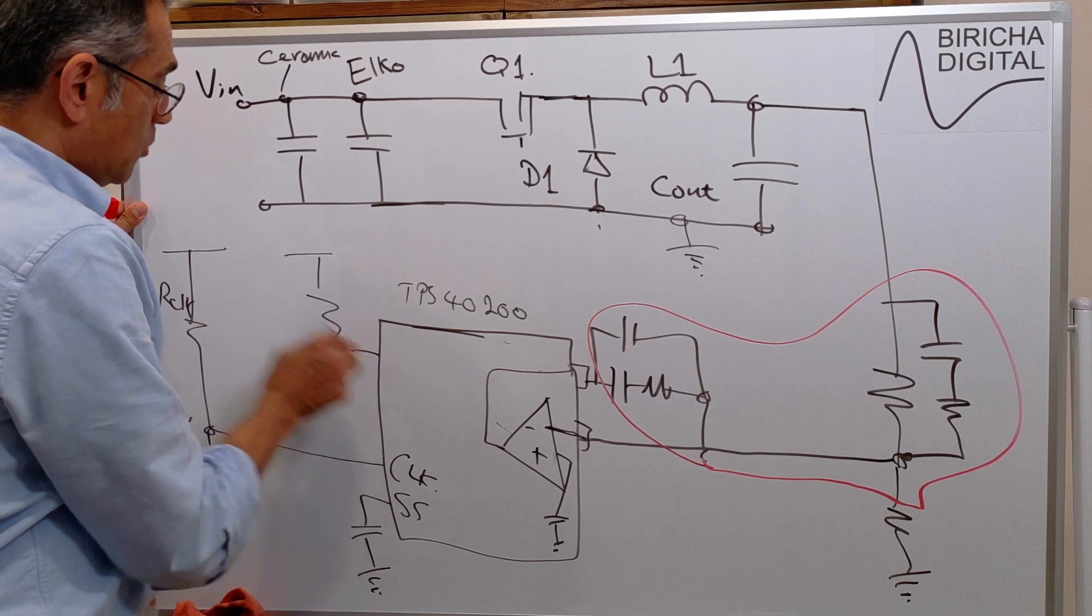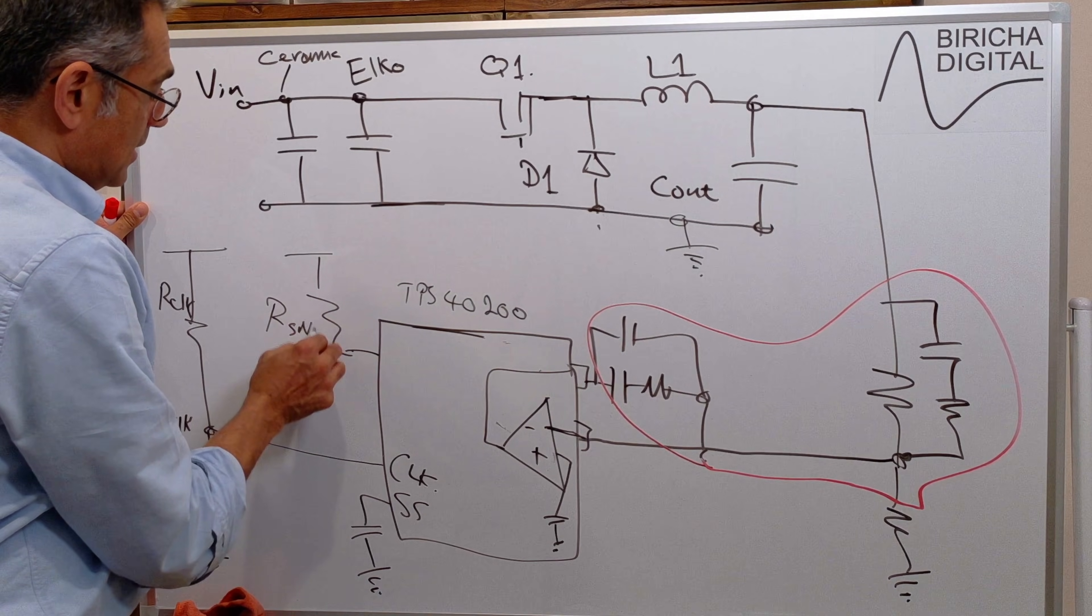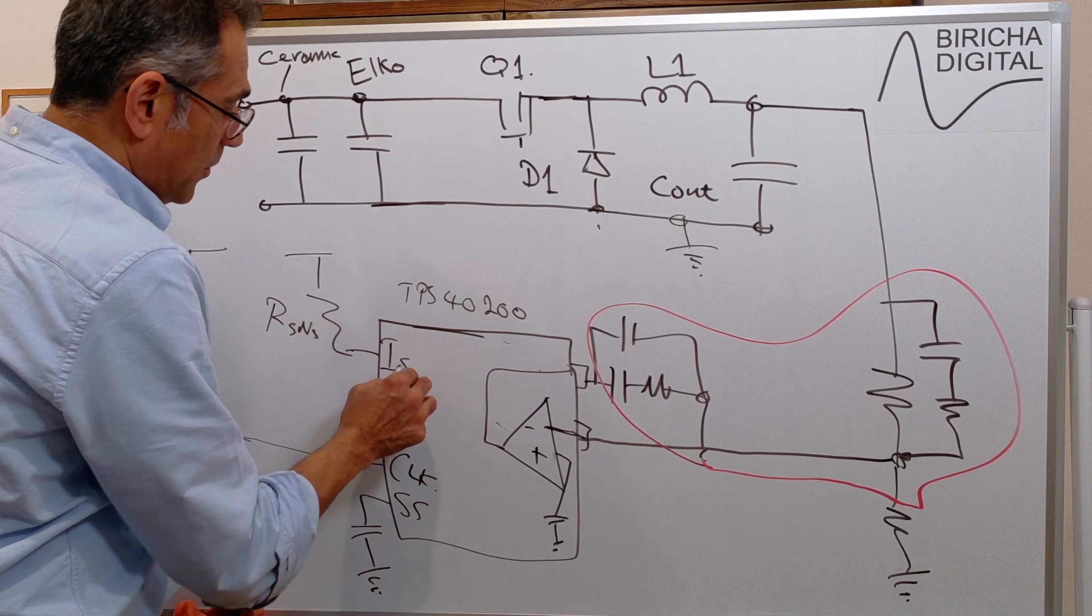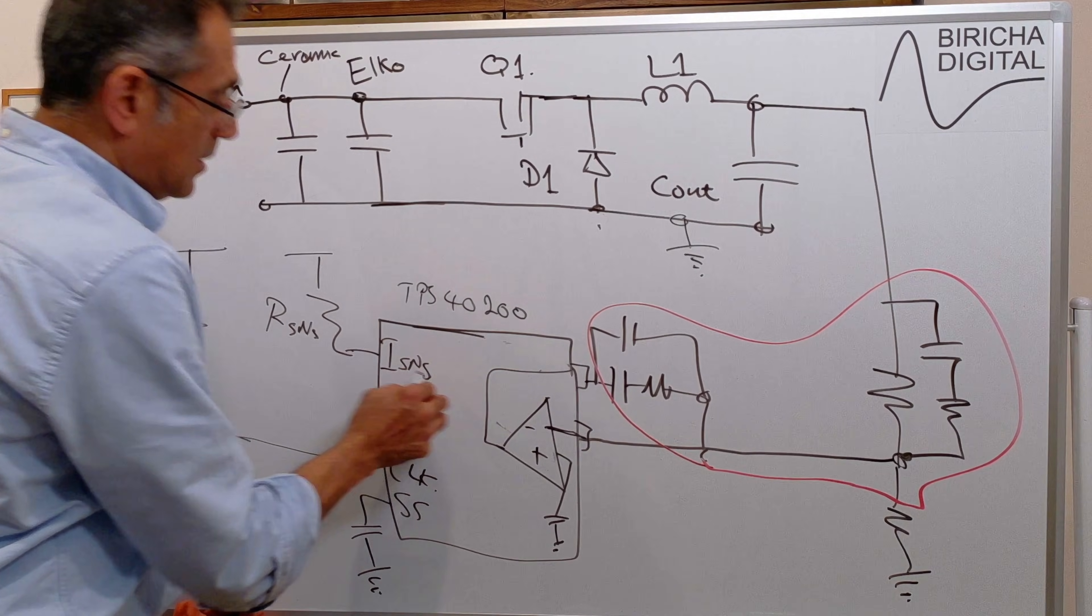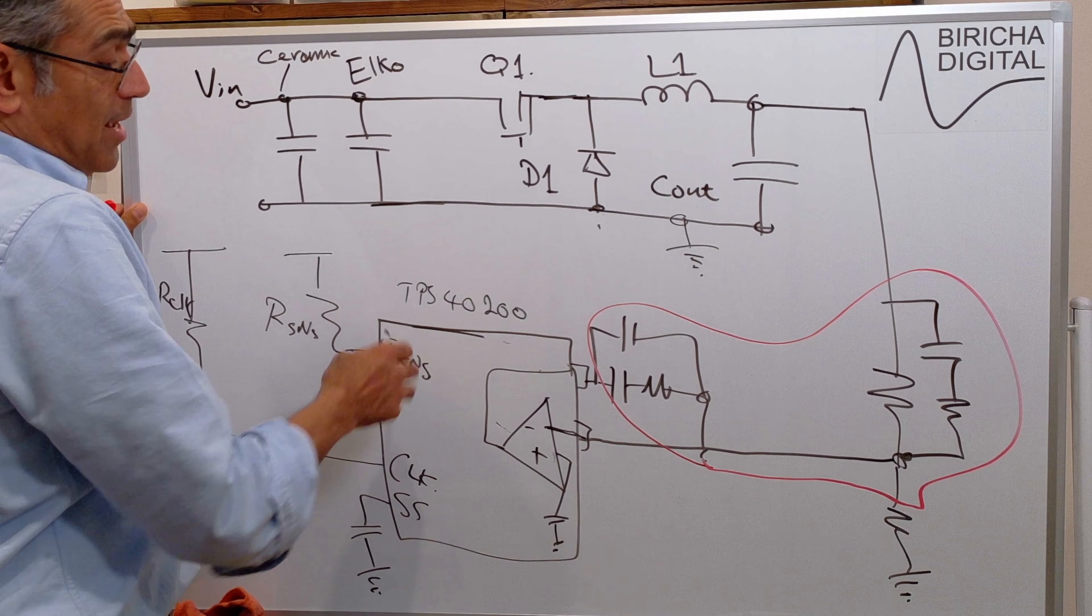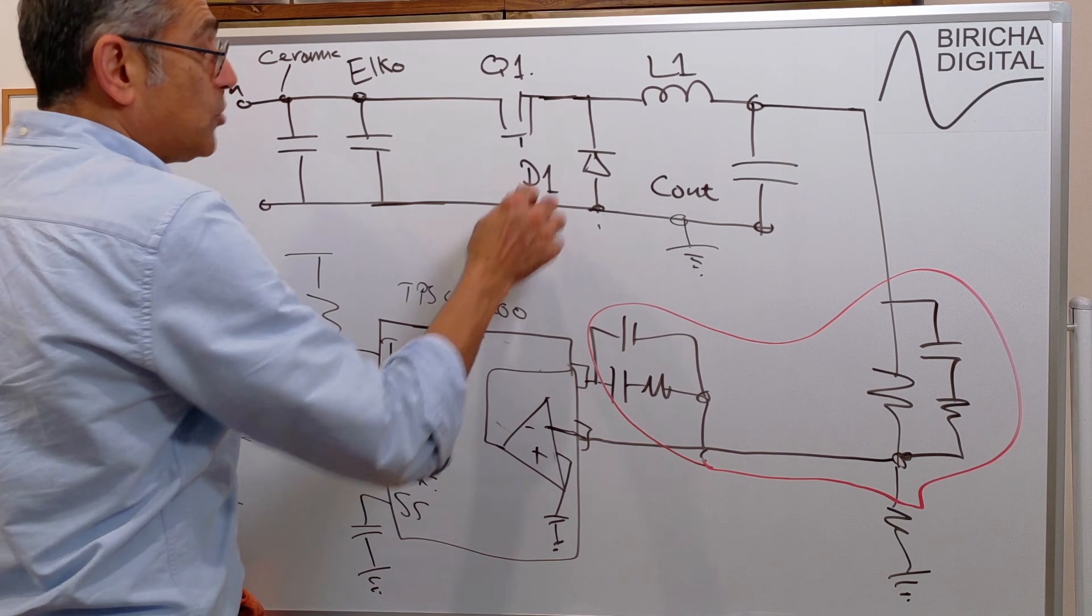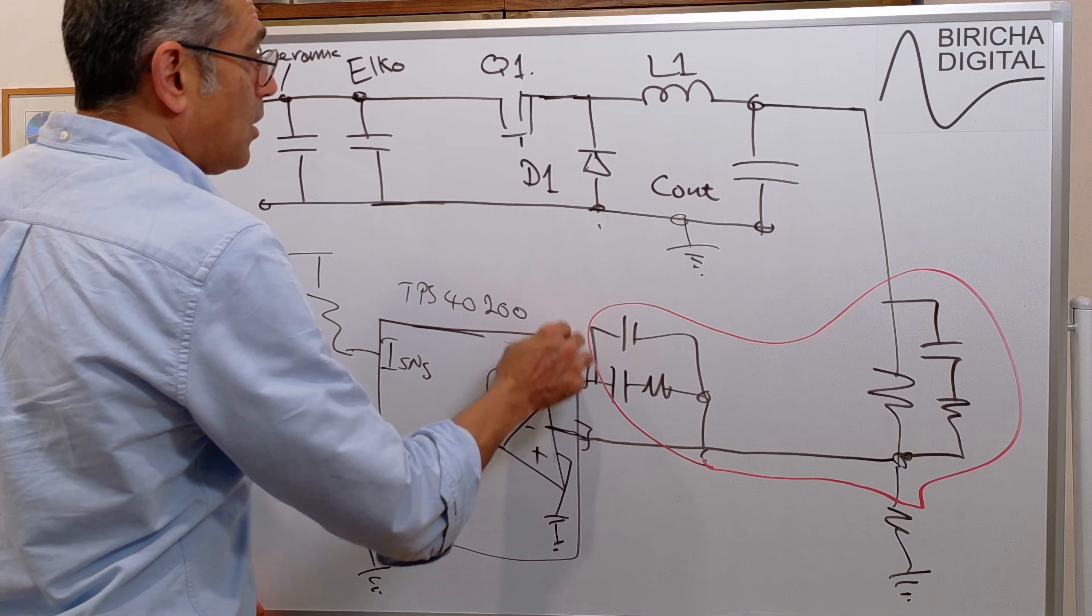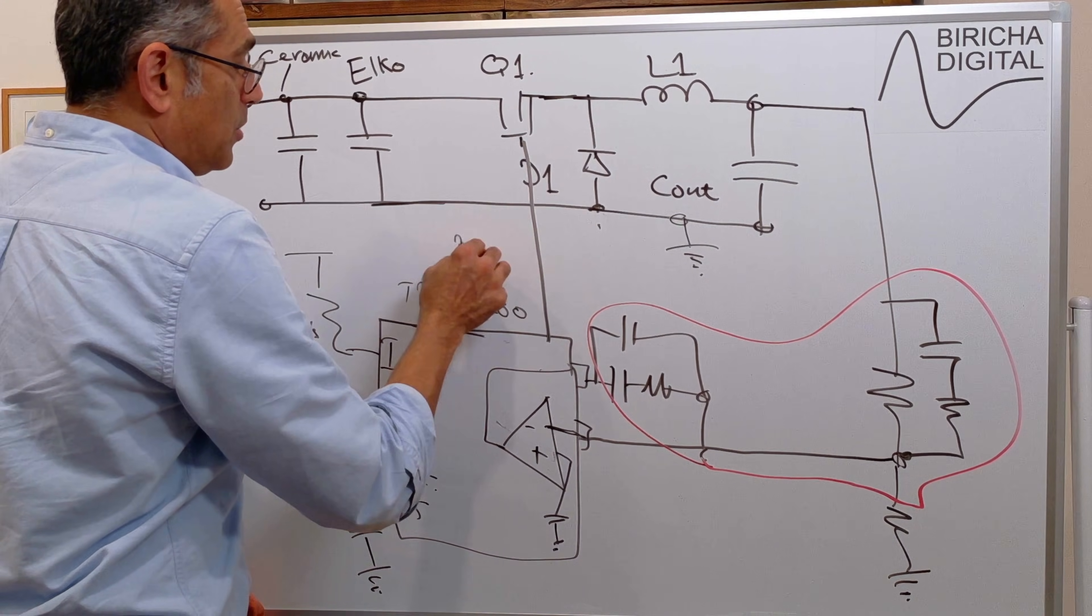So this will be R-sense, which goes to I-sense. And then the output of this will go to the PWM. There we go. PWM.